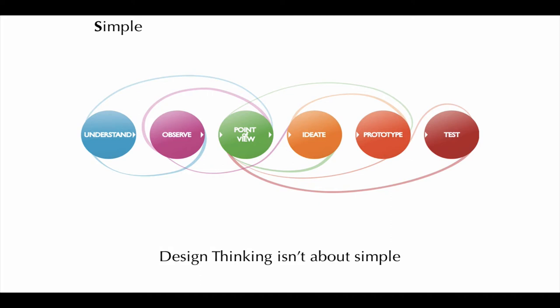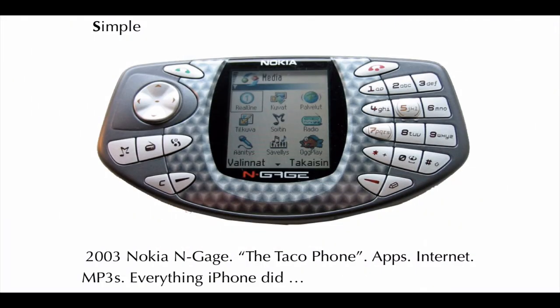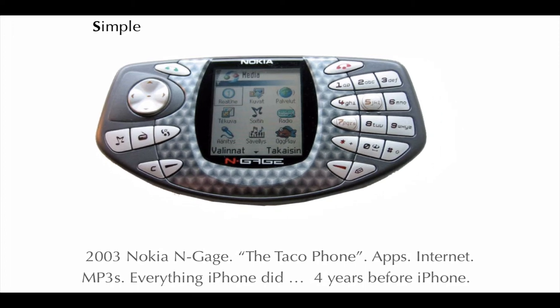As a case in point, this is the 2003 Nokia N-Gage, possibly the worst designed phone of all time. But really it's fairly astonishing that in 2003 a device was able to achieve essentially the same functionality as iPhone four years later. Nevertheless, this thing sank like a stone.